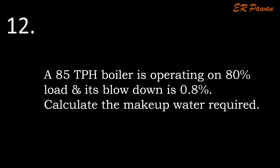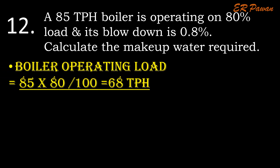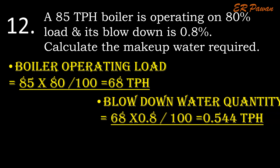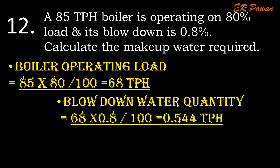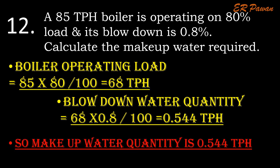Question 12: An 85 TPH boiler is operating on 80% load and its blowdown is 0.8%. Calculate the makeup water required. Boiler operating load = 85 TPH × 80% ÷ 100 = 68 TPH. Blowdown water quantity = 68 TPH × 0.8 ÷ 100 = 0.544 TPH. So makeup water quantity is 0.544 TPH.